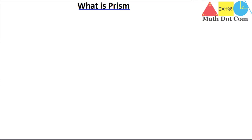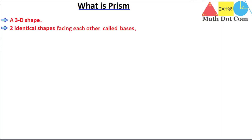A prism is basically a shape that has certain properties. The first property is that it must be a 3D shape — not a two-dimensional shape, a three-dimensional shape. The second property of a prism is two identical shapes facing each other, called bases.